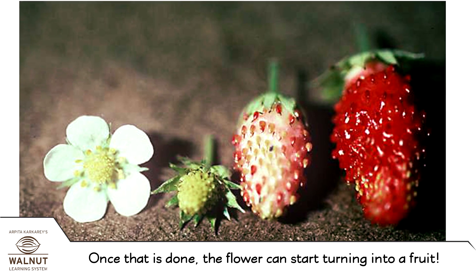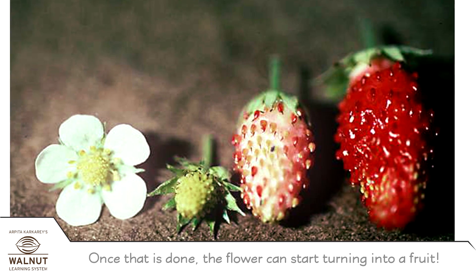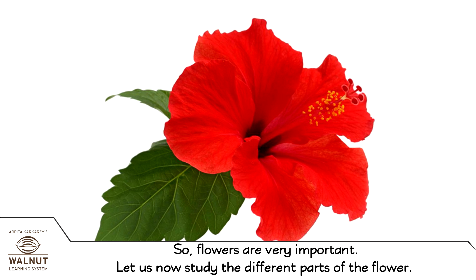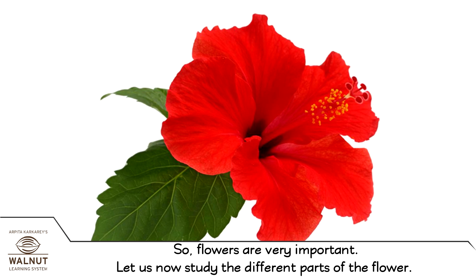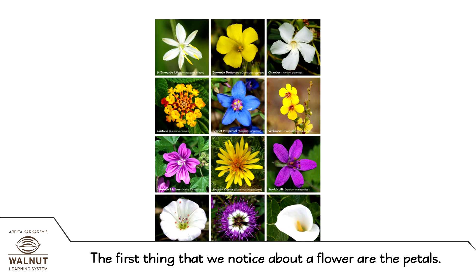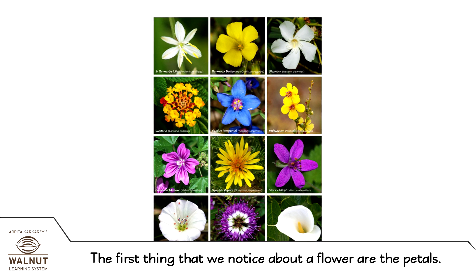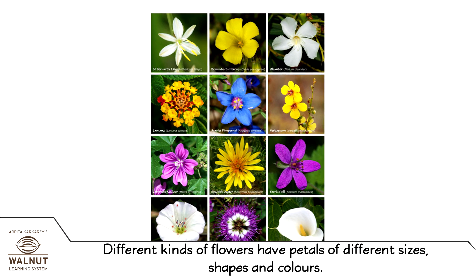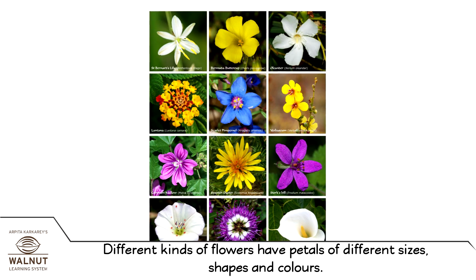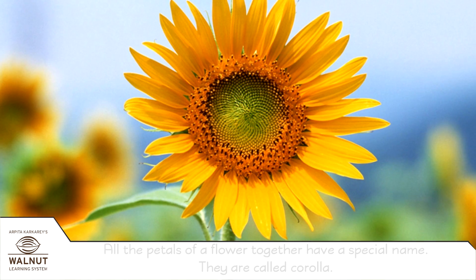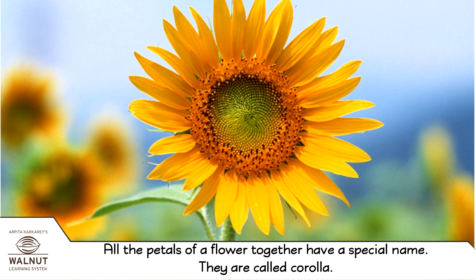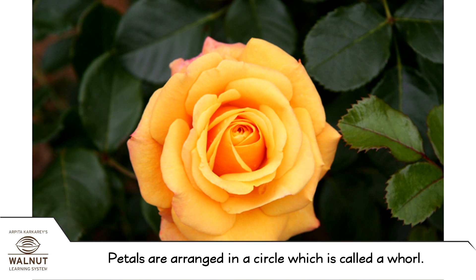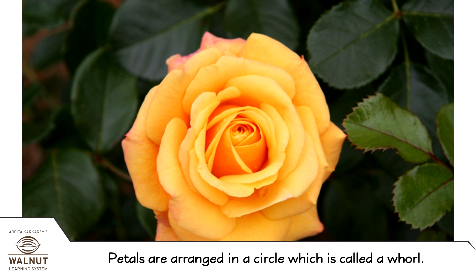The pollen sticks to them and travels to other flowers with them. Once that is done, the flower can start turning into a fruit. So flowers are very important. Let us now study the different parts of the flower. The first thing that we notice about a flower are the petals. Different kinds of flowers have petals of different sizes, shapes and colours. All the petals of a flower together have a special name — they are called corolla. Petals are arranged in a circle which is called a whorl.